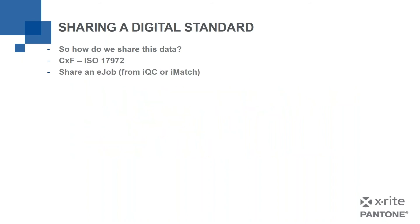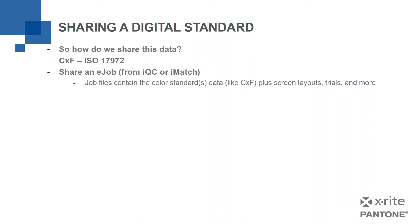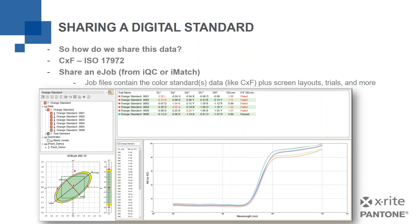You can also share colors using an e-job from IQC or iMatch. This goes beyond the CXF — you're sharing a job file that contains the color standard or multiple standards, but it also lets you share screen layouts, trials, tolerances, and more. So I could literally share my job with you with the orange standard in it. Maybe you're my supplier, you've made six batches of this color and measured them in, and now you send the file back to me. I open it up and see your measurements — so not only can we share standards, we can share measurement results and start to troubleshoot discrepancies.